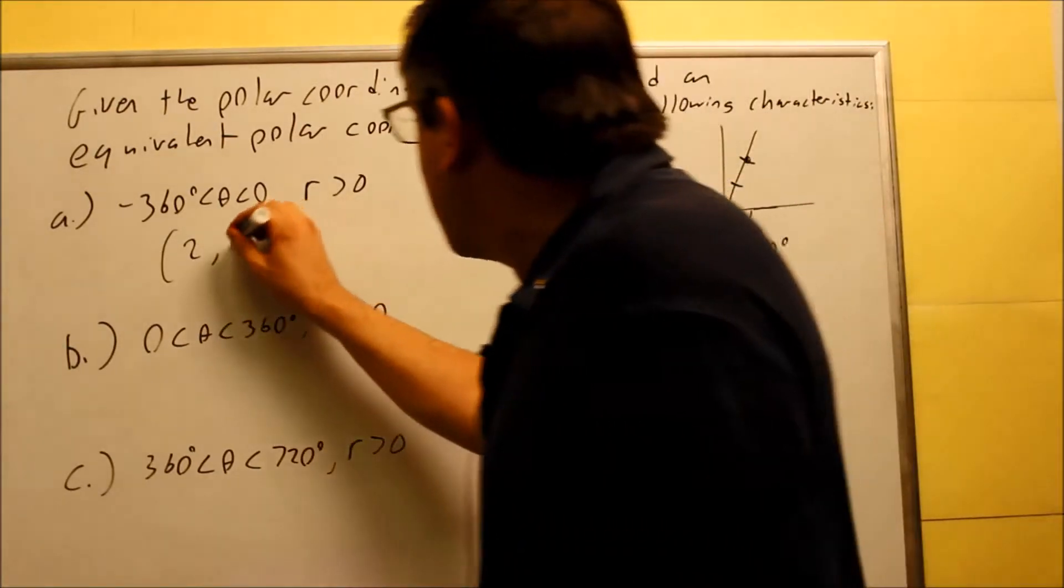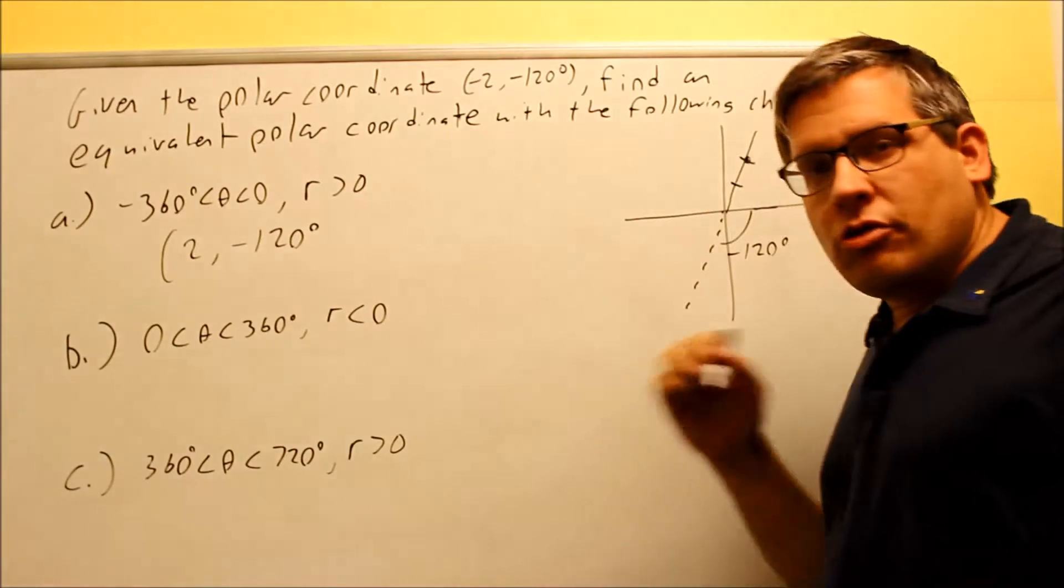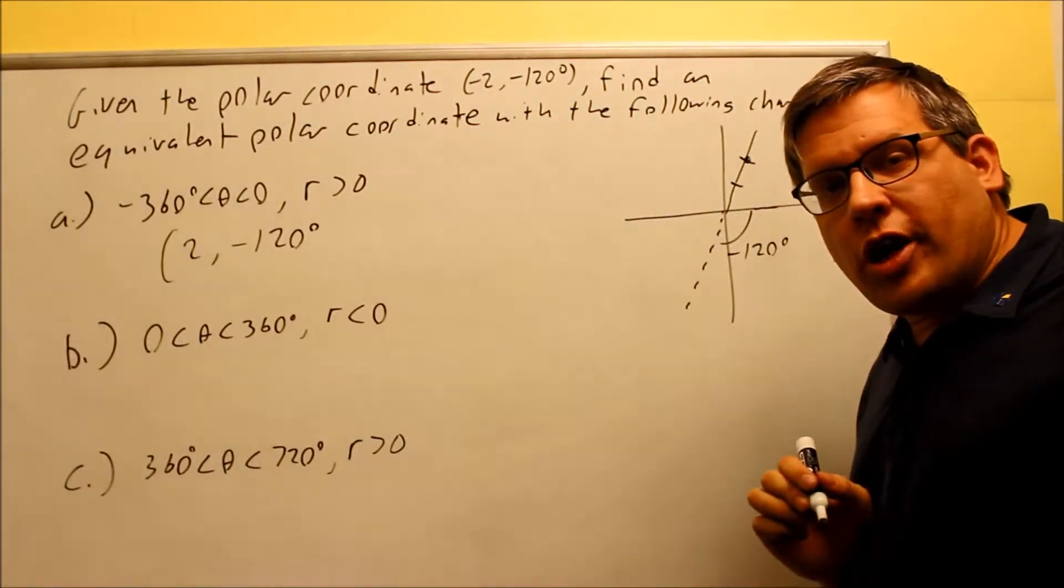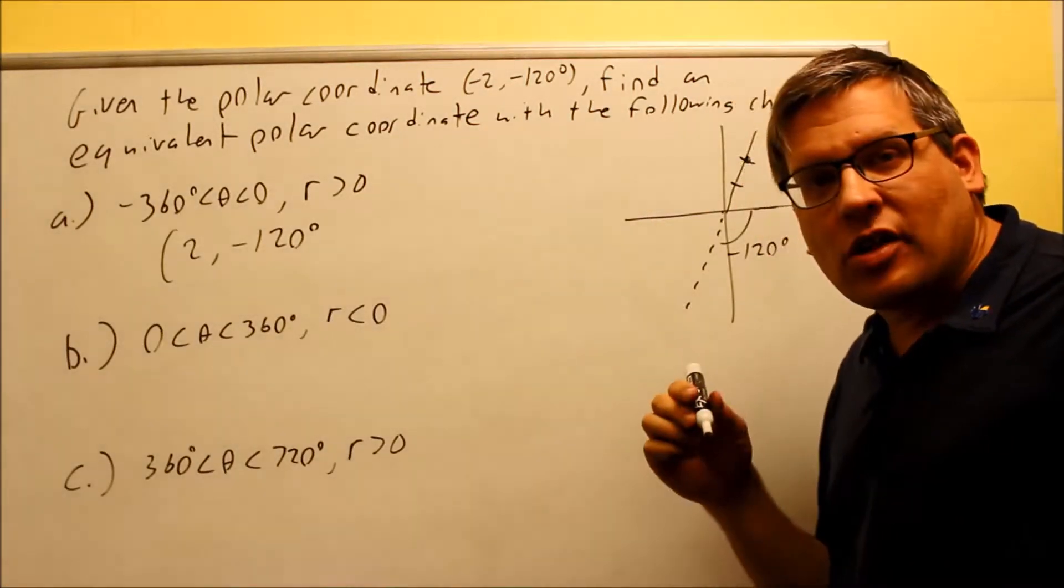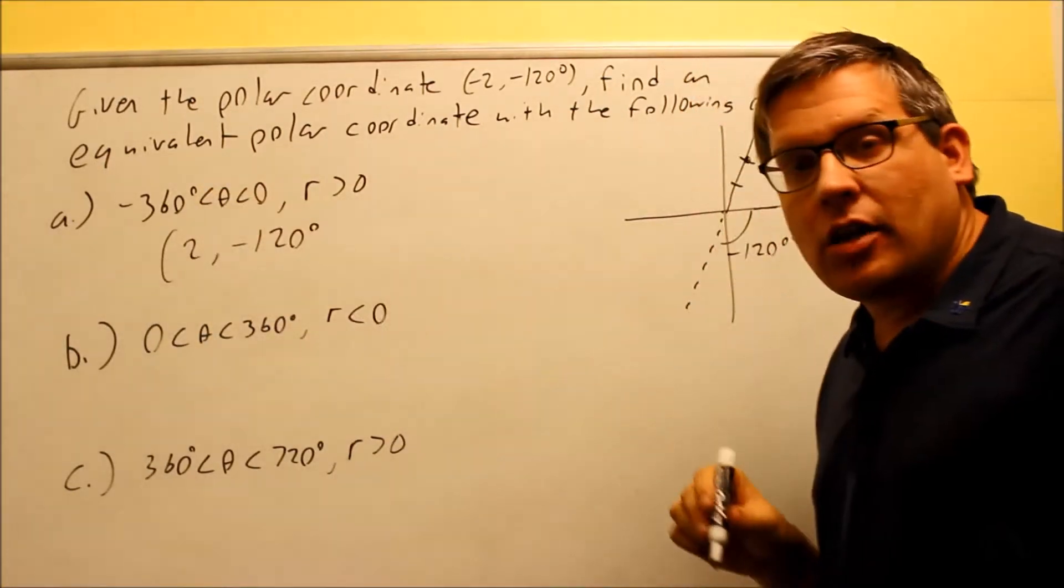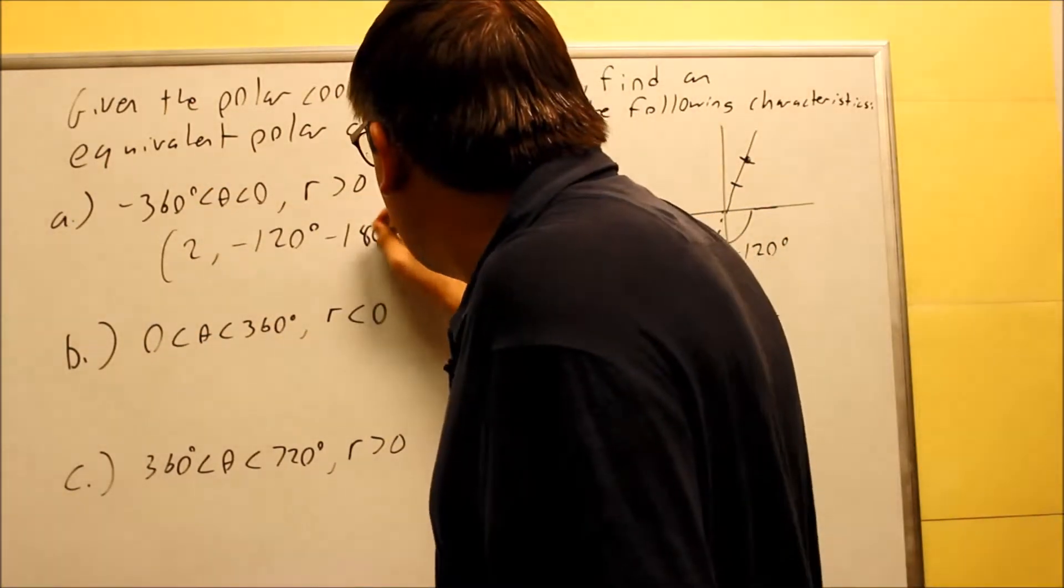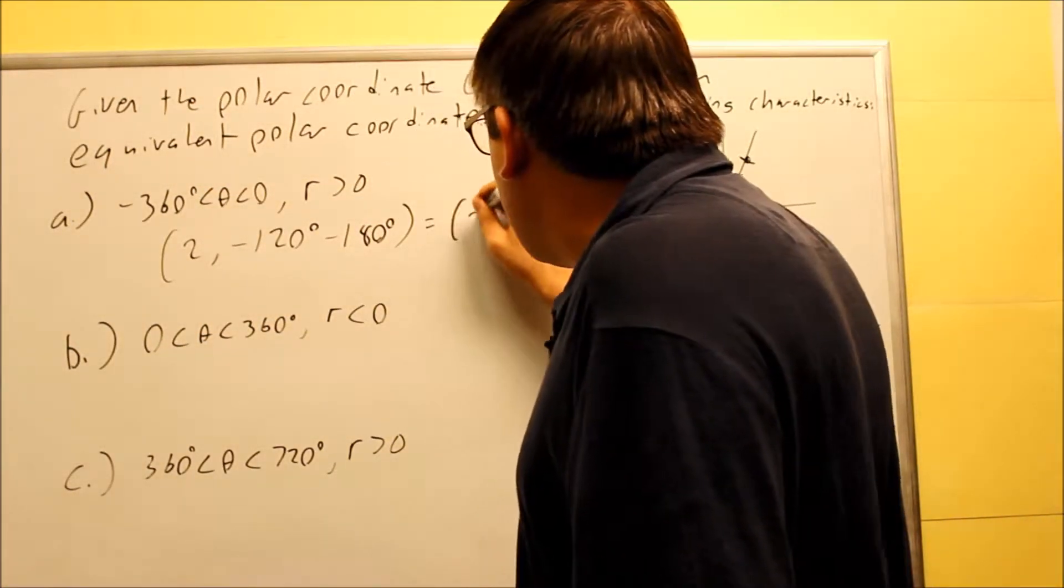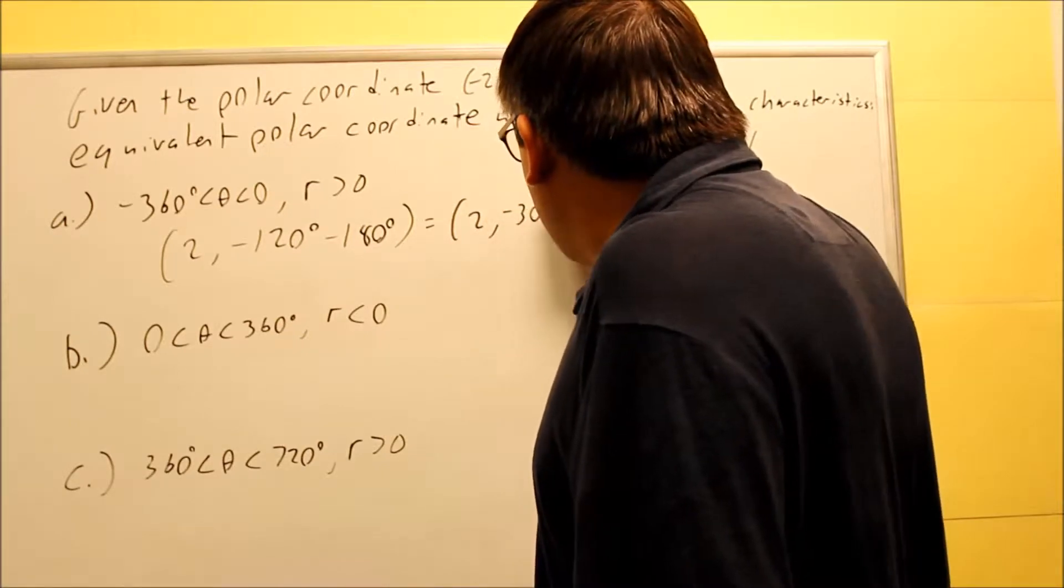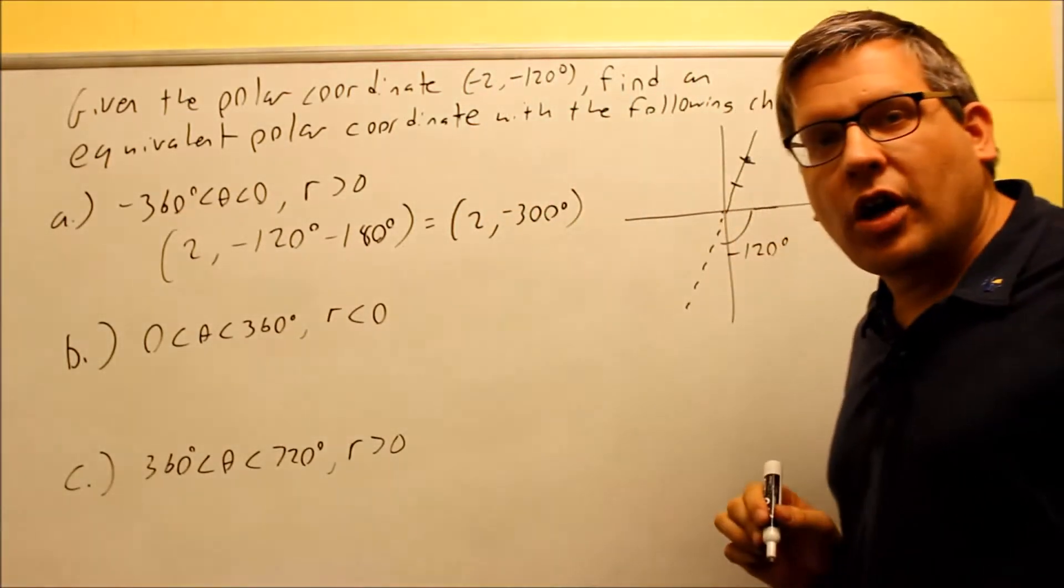Now I'm starting with negative 120, and I need to choose whether to add or subtract 180. Now if I add 180, I get a positive angle. I don't want that. I want to keep the angle negative, so I'm going to choose to subtract 180 degrees. This will give me 2 and negative 300 degrees.